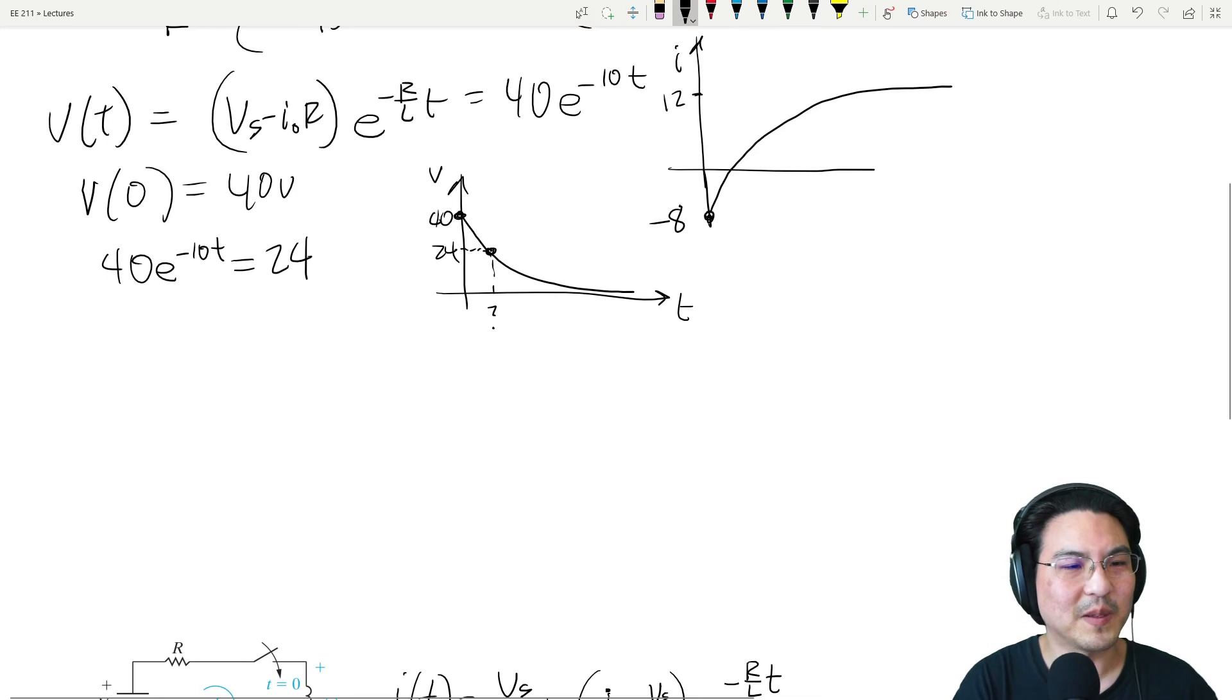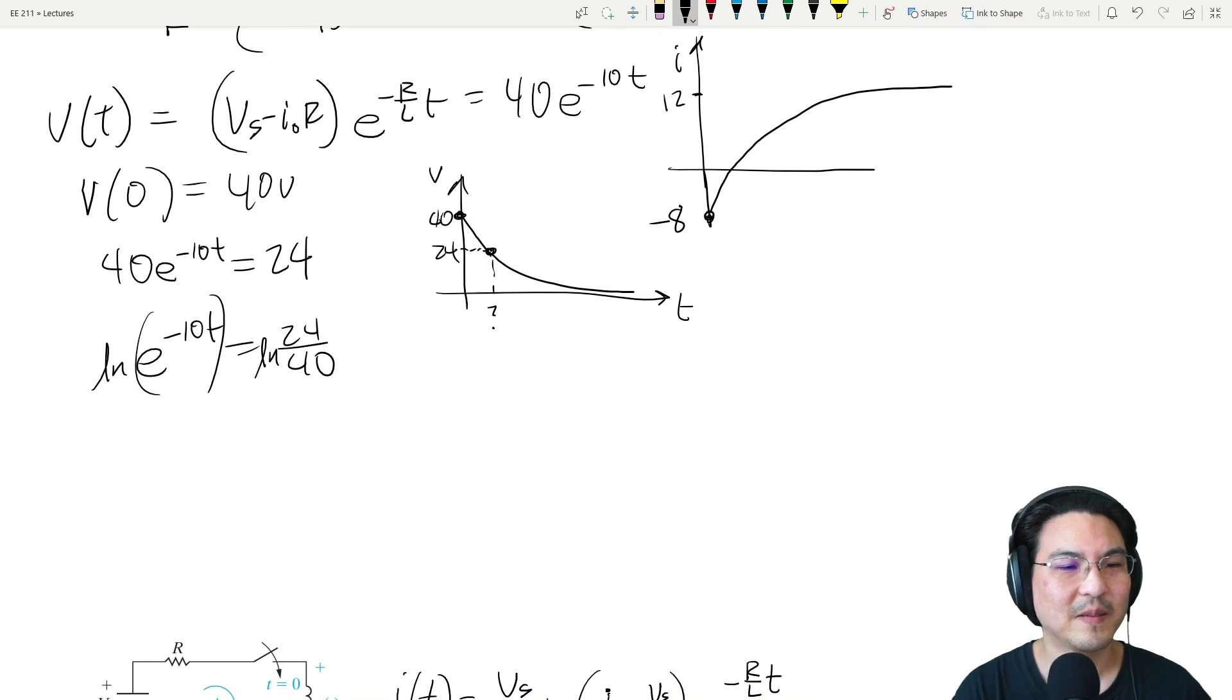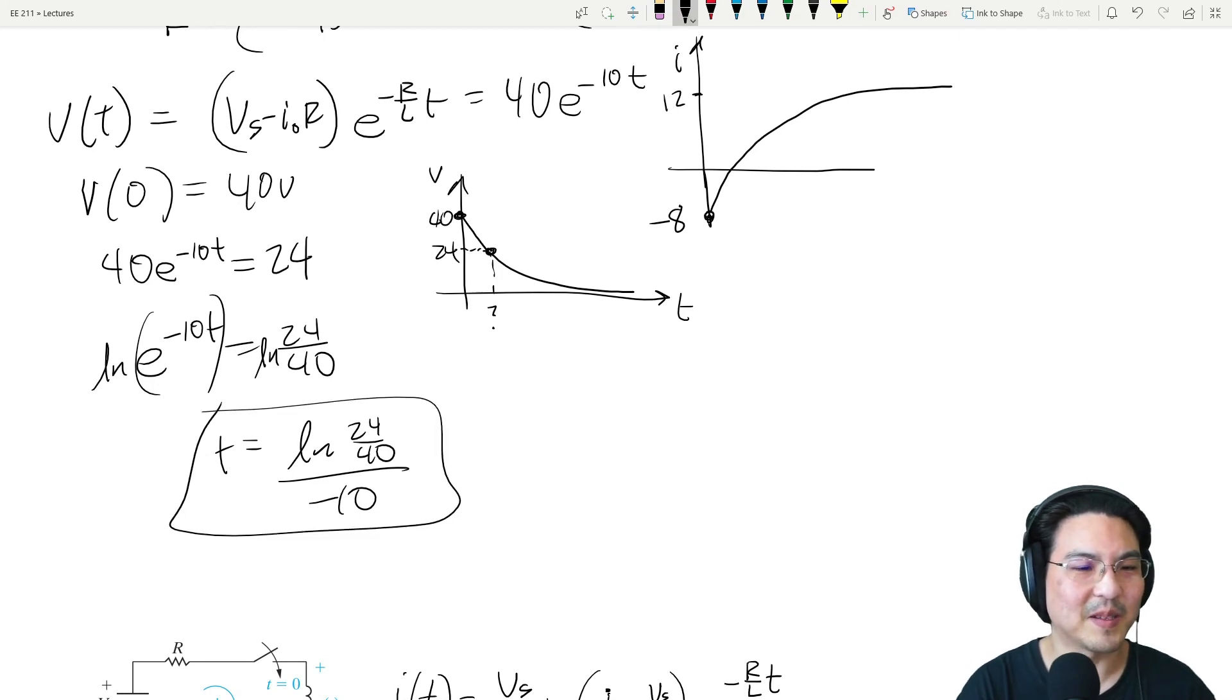Let's go step by step. Move 40 to this side, and then how do we deal with this? The inverse. So then this turns into minus 10t, and just multiply by negative 10, and there we go. Done, there's the time.